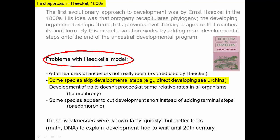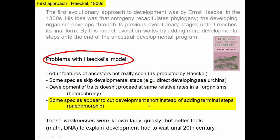Some species skip developmental steps. For example, there are direct-developing sea urchins which take a shortcut in their development — they don't have every step like their close relatives do, and that doesn't make any sense if evolution works by adding steps on the end of development. Development of traits also doesn't proceed at the same relative rates in all organisms, so there are lots of differences in the timing of developmental events. And some species appear to cut development short — there are what are called pedomorphic organisms that appear to have stopped their development earlier than their ancestors, which is something Haeckel would not have thought possible.